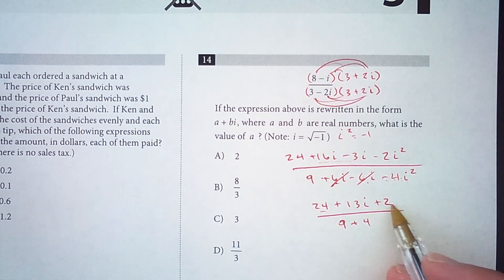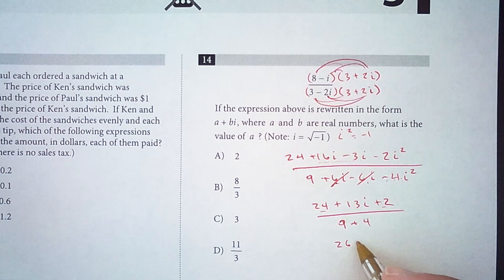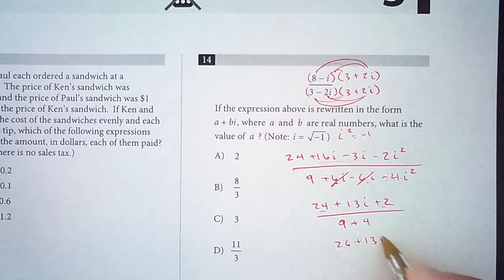One more set of like terms here, 24 plus 2 is 26, plus 13i. And another set, 9 plus 4 is 13. Now 13 divides evenly into both terms in the numerator, so we can simplify dividing all terms by 13, and we get 2 plus i.